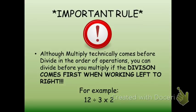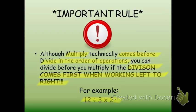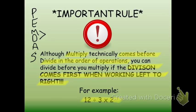Two important rules to note: although multiply comes before divide in the order of operations and in the saying, you can divide before you multiply if the division comes first when working left to right. In our memory tool, multiply comes before divide, but they are actually interchangeable — you do whatever comes first in the problem. So in this case we would divide 12 by 3, get 4, then multiply, and you get 8, which is the correct answer. Had you multiplied first, you would have gotten 2, which is incorrect.